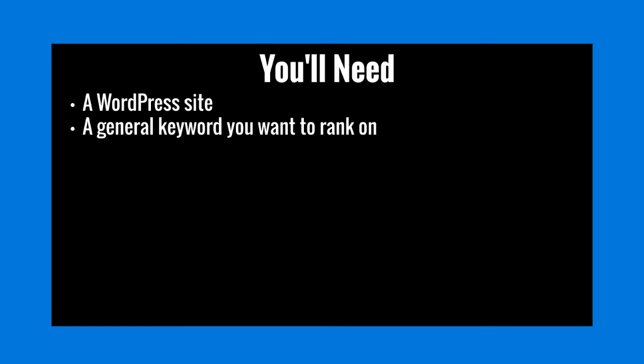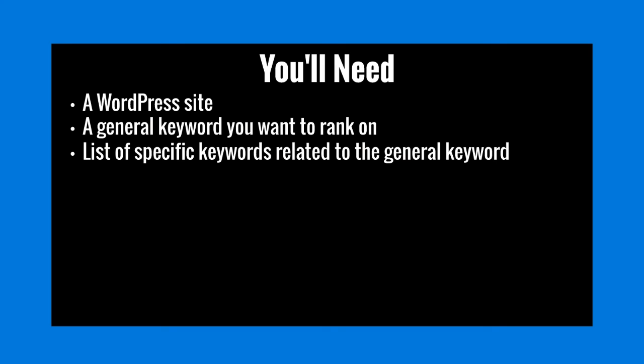Here's what you're going to need. You'll need a WordPress site — though these fundamentals still hold true for other platforms as well. You'll need a general idea of the main keyword you want to rank for, plus a list of specific related keywords, because you're going to use these in your body text, title text, metadata text, and even your image alt tag text.